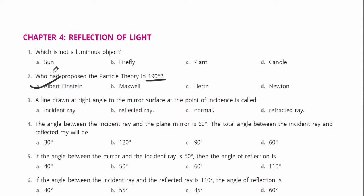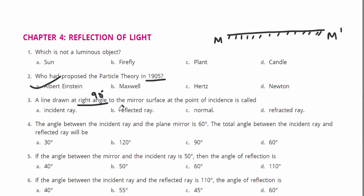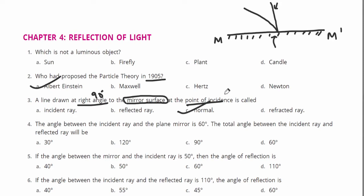Question number three: a line drawn at right angle to the mirror surface at the point of incidence is called what? Suppose you have a mirror on the wall. A line drawn at 90 degrees to the mirror surface at the point of incidence is colored as the 'normal.' So option C — normal — will be the correct answer.